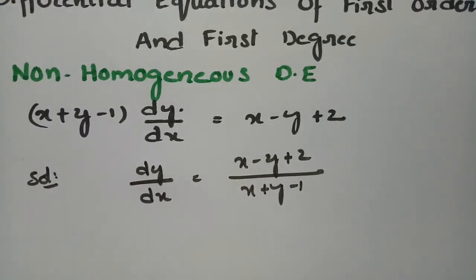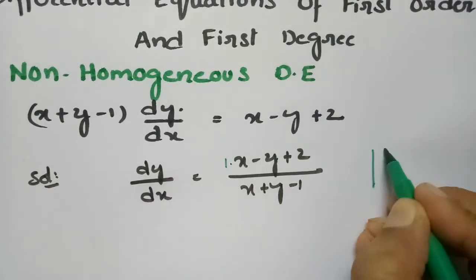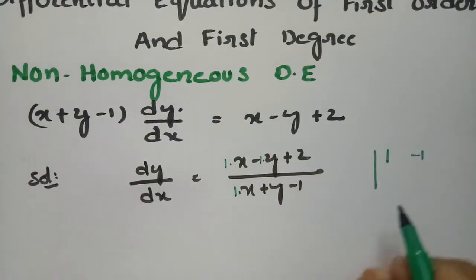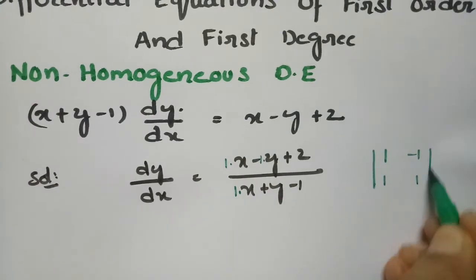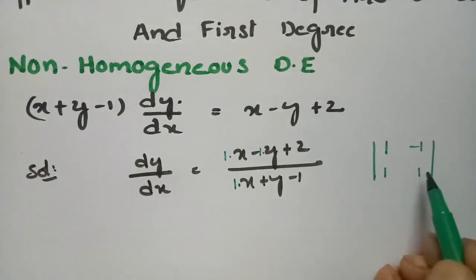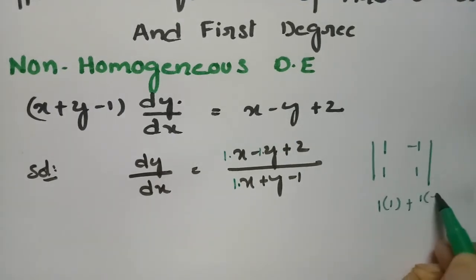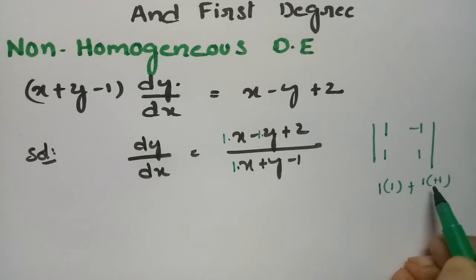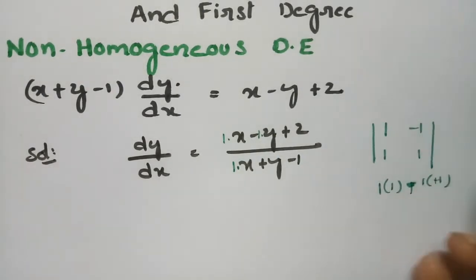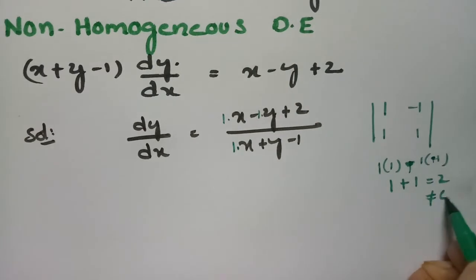There are two methods for non-homogeneous differential equations. Here the coefficient of x is 1 and the coefficient of y is -1 in the numerator, and the coefficient of x is 1 and y is 1 in the denominator. We compute a1*b2 - a2*b1, which is 1×1 - 1×(-1) = 1 + 1 = 2, and this is not equal to 0.